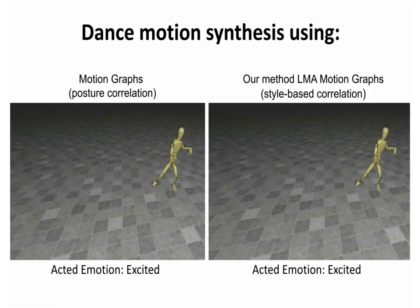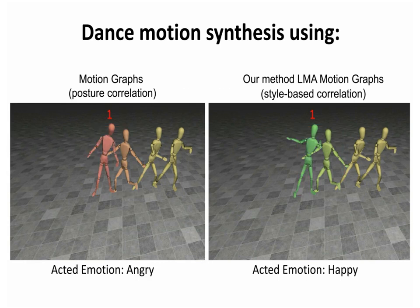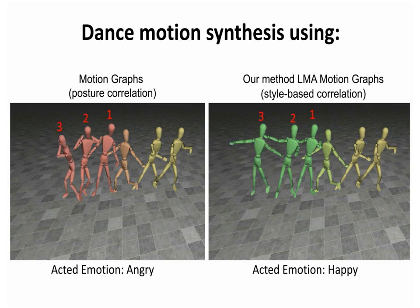In this example, the dancing character is driven by automatically synthesized motions using the two methods. The goal is to synthesize motion that minimizes the transition cost, which is based on emotion state coherence. The character is initially acting as being excited. As shown on the left, the character transitions to a motion annotated as angry, while the character using our method on the right transitions to a motion annotated as happy. The overall motion produced appears more consistent and plausible.